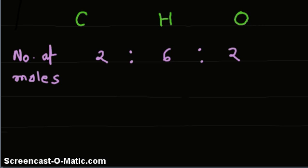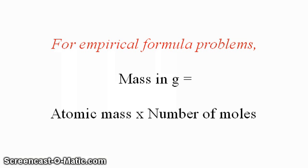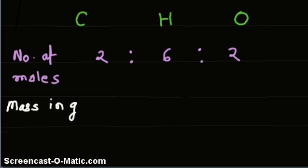Now, in order to find the percentage by mass, first step is to find the mass in grams. We would use the formula for empirical formula problems. Mass in grams is equal to atomic mass times number of moles.